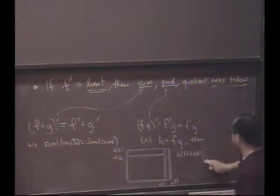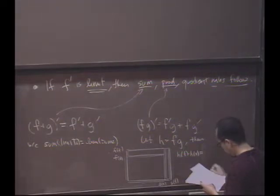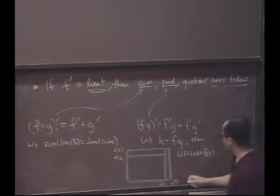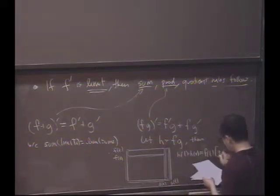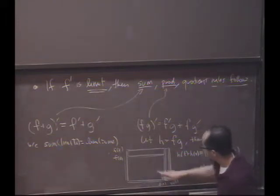In one case, the area of the box is, the width is f of t, that's this height here, f of t, times g of t minus g of x, plus g of x, which is this length here.